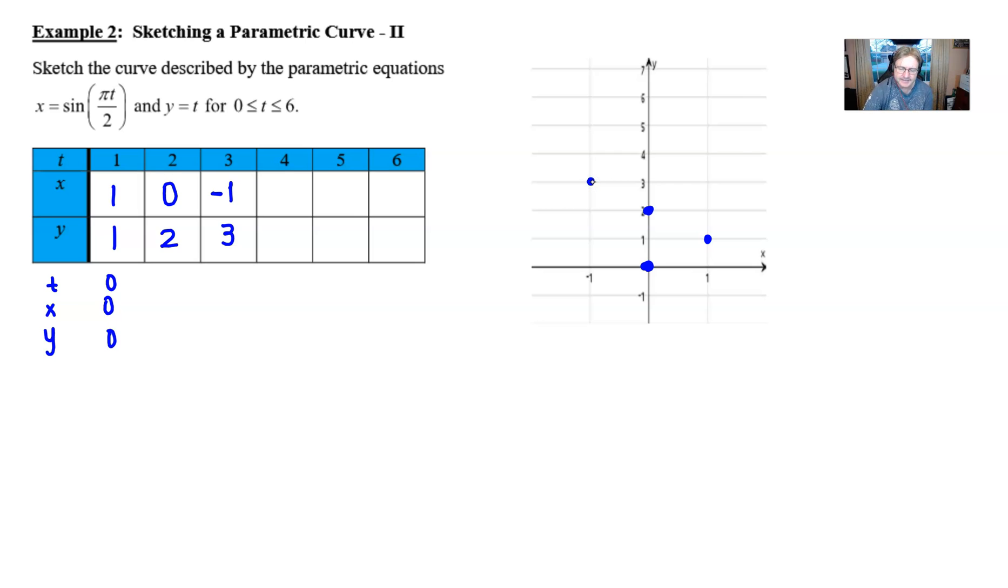You might get a little idea about where this thing is going. If t is 4, the sine of 4 pi over 2 is the same as the sine of 2 pi, which is 0. Y is still 4. And I think we're just starting to kind of snake around back and forth here.